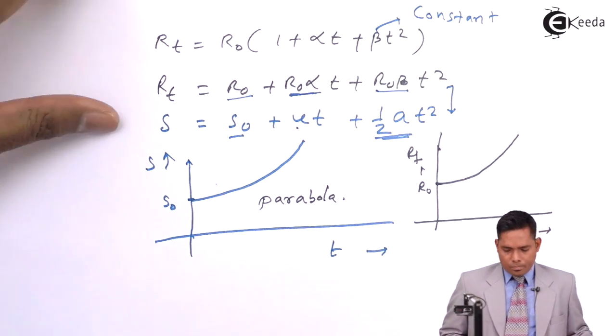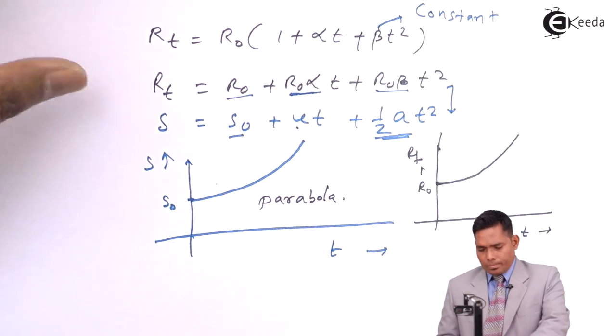If we neglect the third term (beta·T²), then it becomes a straight line. So, though the variation is not actually linear, we still say that as you increase the temperature, the graph is moving towards more positive values of resistance — it is moving up.